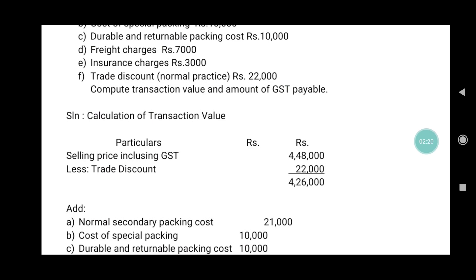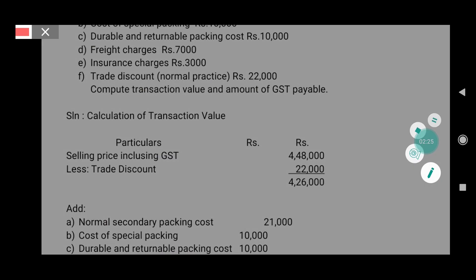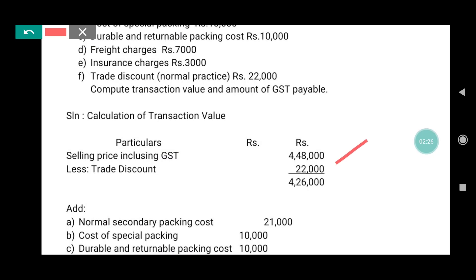Trade discount is given by the supplier, so trade discount is to be deducted. Trade discount of ₹22,000 is deducted. After deducting trade discount, the amount becomes ₹4,26,000.